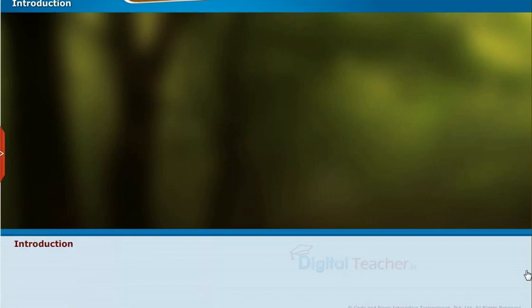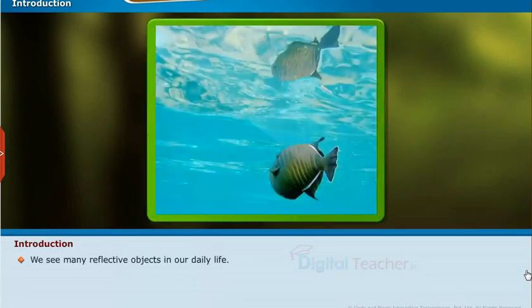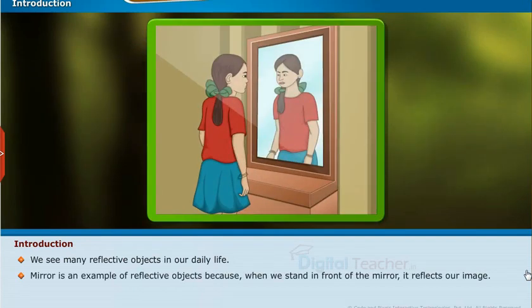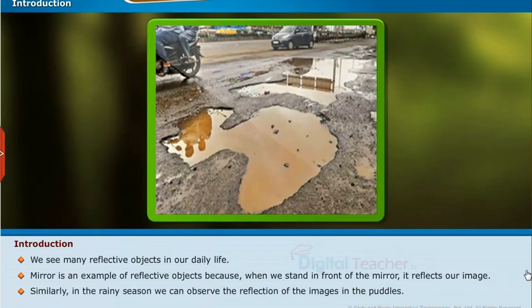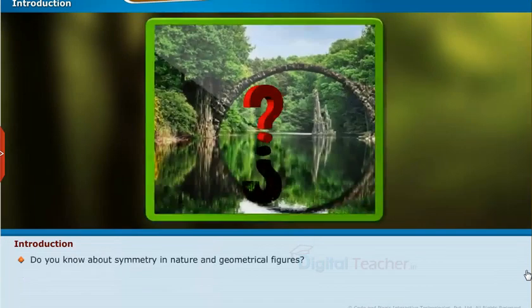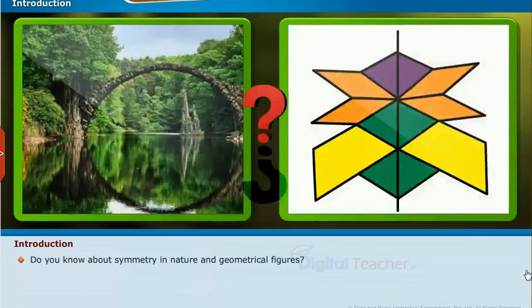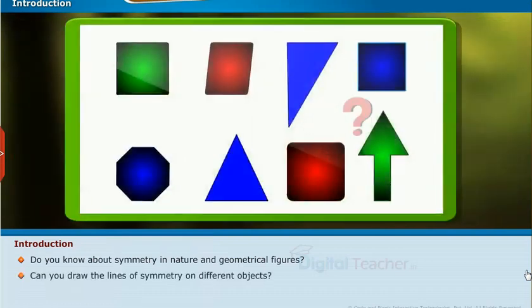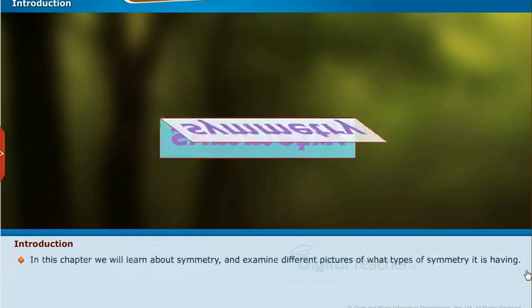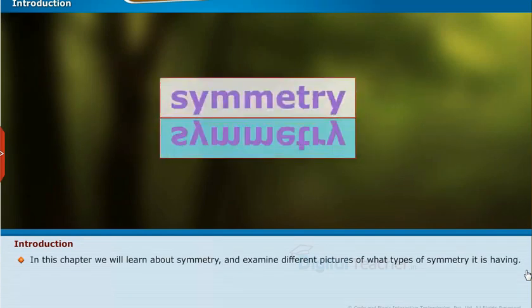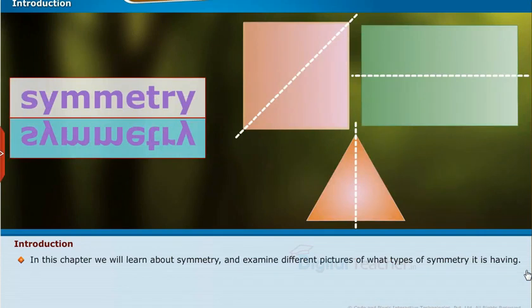Let us start with an introduction. We see many reflective objects in our daily life. A mirror is an example of a reflective object because when we stand in front of the mirror, it reflects our image. Similarly, in the rainy season, we can observe the reflection of images in puddles. In this chapter, we will learn about symmetry and examine different pictures to identify what types of symmetry they have.